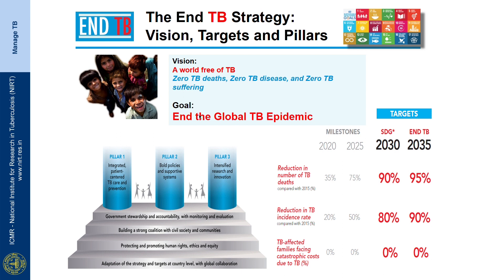The End TB strategy has a vision of zero TB deaths. Its targets include a 90% reduction in absolute TB mortality and an 80% reduction in incidence compared to 2015 levels. The Government of India envisages attaining these targets five years earlier, by 2025.